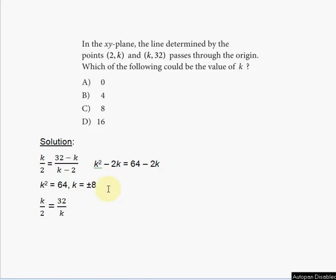So you have k squared minus 2k is equal to 64, because 32 times 2 is 64, minus 2k. Negative 2k cancel out, you're left with k squared is equal to 64, and you're taking the square root in both sides and you're going to have k is equal to plus or minus 8. And minus 8 is not included in the answer choices, only positive 8 is included, so you know answer choice C is the correct answer.